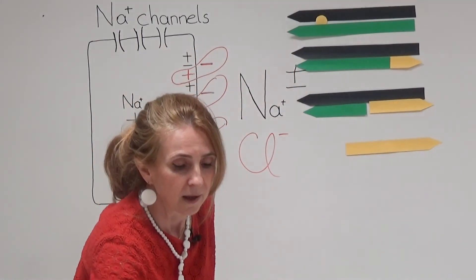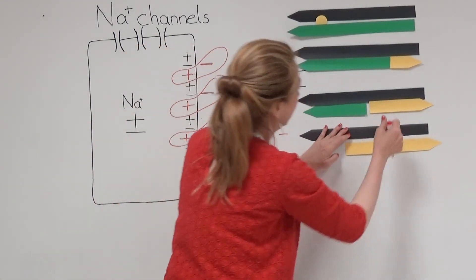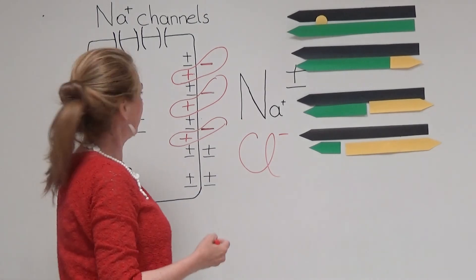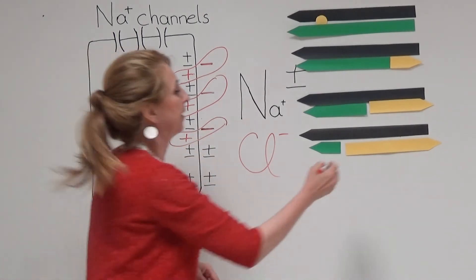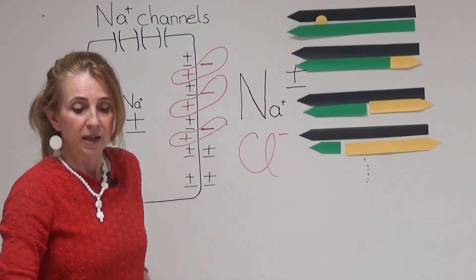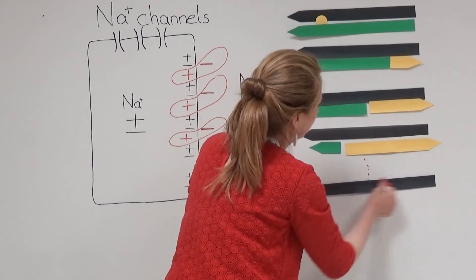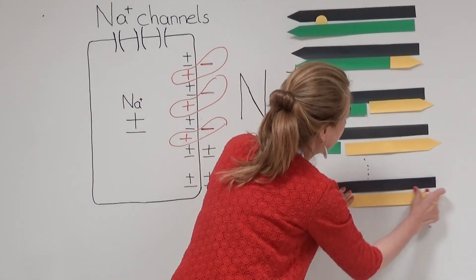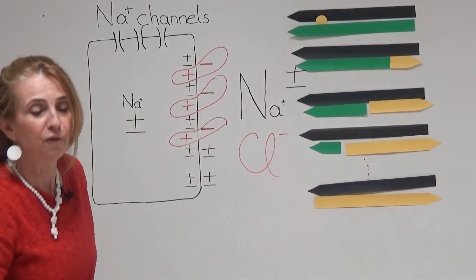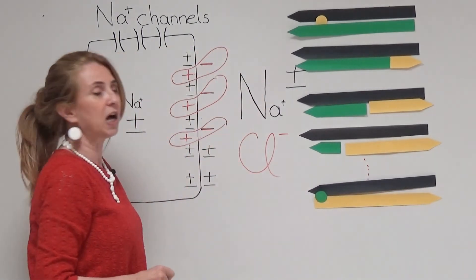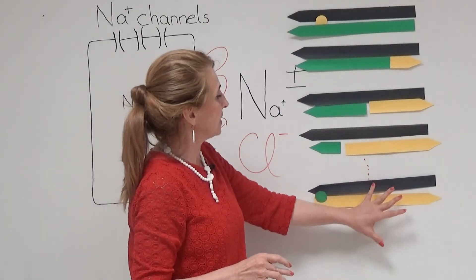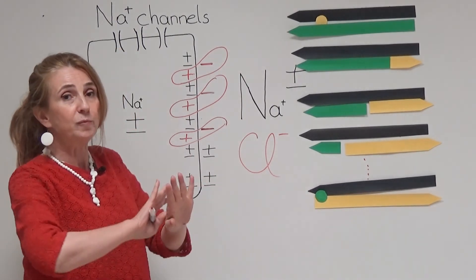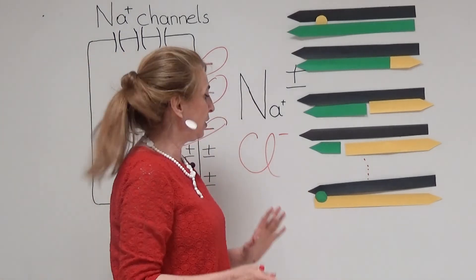The electrical force grows further. The chemical force stays the same, and the net electrochemical driving force is getting smaller and smaller. How long will this go on? The movement of sodium into the cell will stop when the opposing electrical force becomes equal to the chemical force. At that point, the net force is zero — the two forces are in opposite directions but of equal amplitude, so the net electrochemical force is zero and there will be no net sodium movement. This is an equilibrium condition.